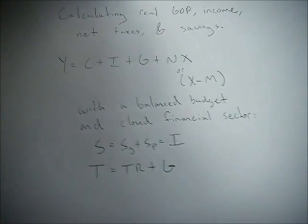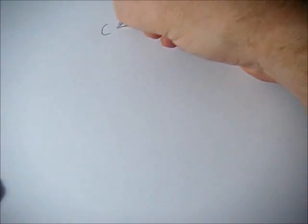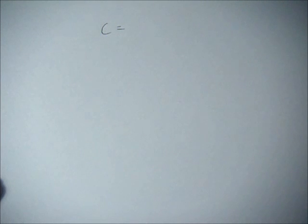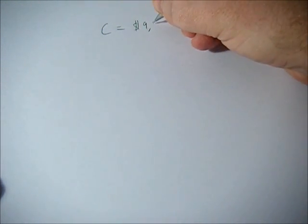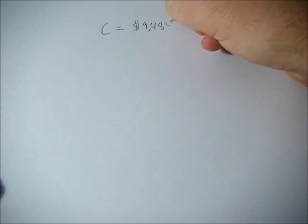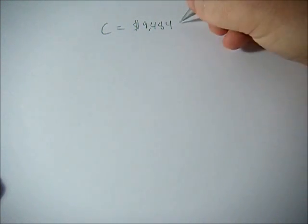So what if we are given values? We can calculate GDP and income, which are the same thing, relatively easily. So if we are given the values for C, consumption spending, say it's $9,484 billion. So all these are in billions.